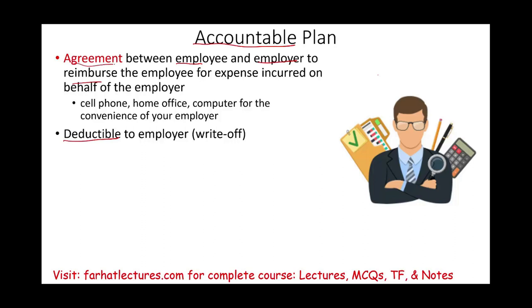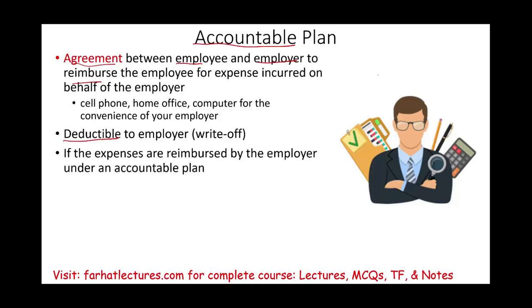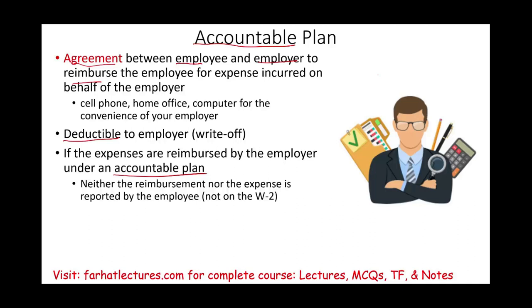If the agreement is an accountable plan — meaning you have to submit everything and they will reimburse you for those expenses — then as a result, you don't have that extra income reported on your W-2. The reimbursement that you receive is not reported on your W-2. So you don't have to worry about the money you spent on your cell phone, home office expense, computer, or any vehicle rented for business. You pay for it, submit your receipts to the company, the company reimburses you — it's basically a wash. It doesn't even appear on your W-2.